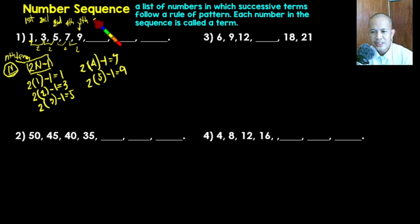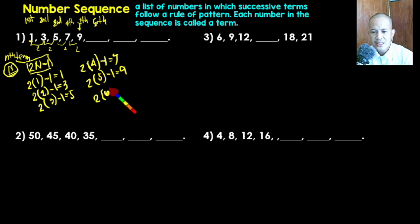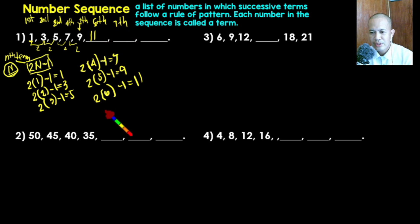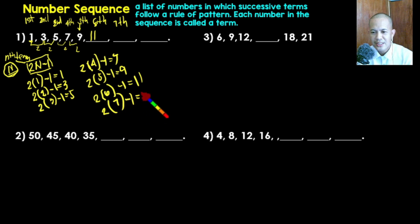Now looking for the sixth term, we put n equals six: two times six is twelve, minus one gives eleven. So the sixth term is eleven. For the seventh term, substituting n equals seven: two times seven is fourteen, minus one gives thirteen. So the seventh term is thirteen.